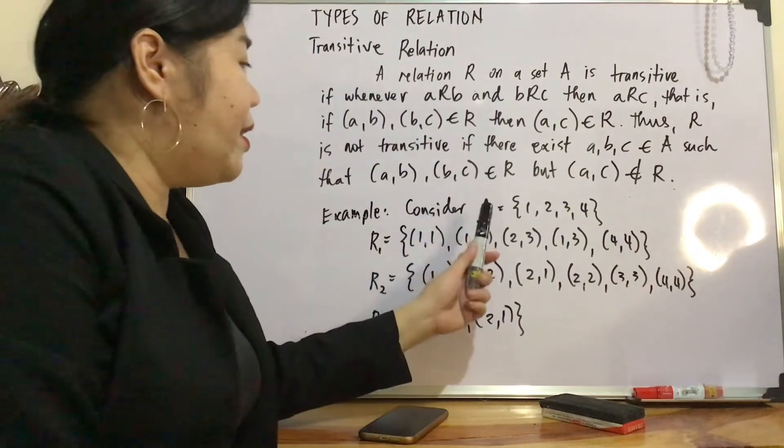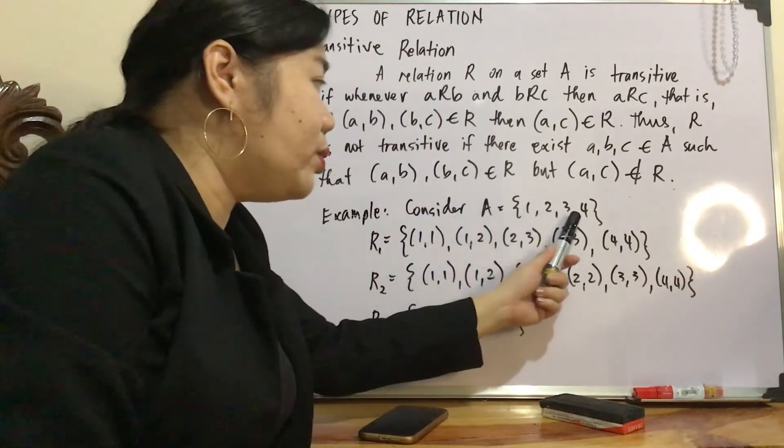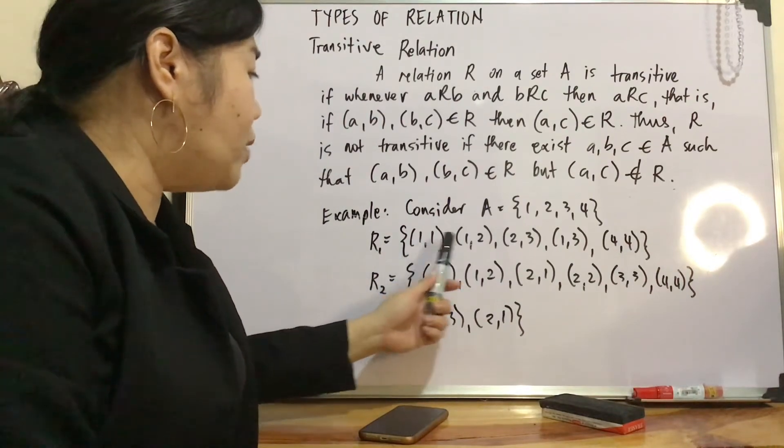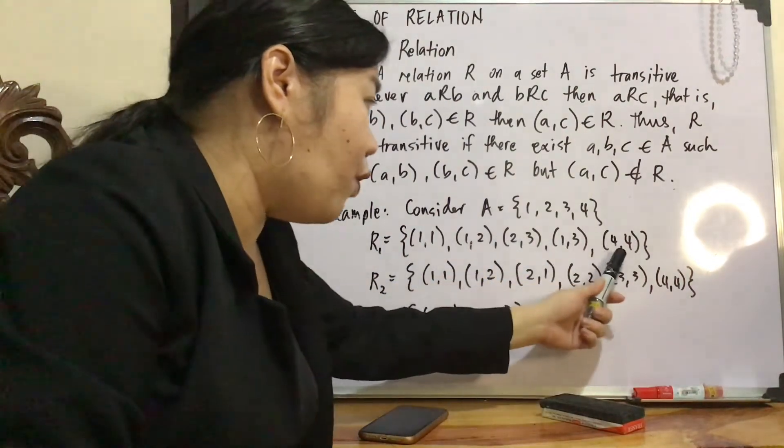Let's consider the set A containing {1, 2, 3, 4}. R1, relation 1, contains {(1,1), (1,2), (2,3), (1,3), (4,4)}.